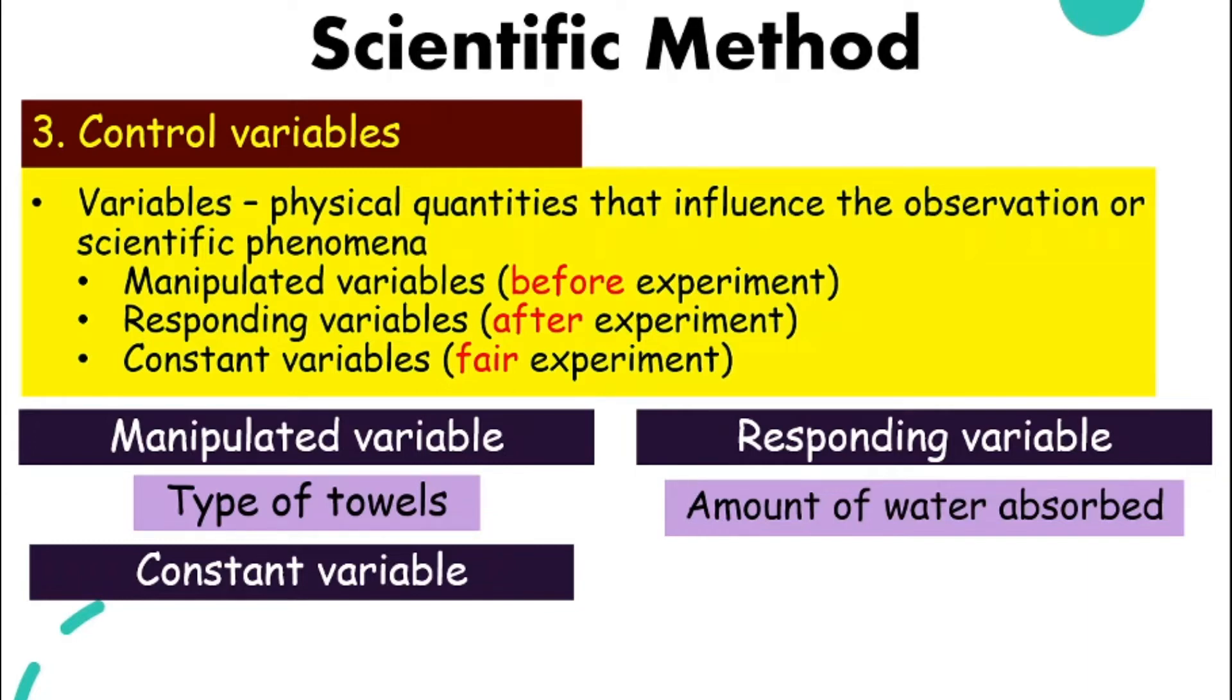What about the constant variable? What is something that we cannot change so that this experiment is fair? It is the type of liquid absorbed. For both tissue and cloth that we are going to test out, we have to absorb the same kind of liquid, which is water. We cannot use water for tissue paper and maybe oil for the cloth. It has to be the same so that this experiment is fair.